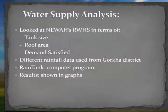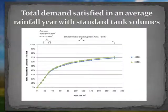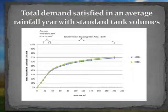This first graph shows households with rainwater from a 4,000 litre and 6,500 litre tank. This shows that rainwater harvesting is quite ineffective, as for the average household roof size of only 15 metres squared, only 17% of the total demand can be satisfied. Limited water supply is mainly due to the monsoonal weather patterns and the small roof size.